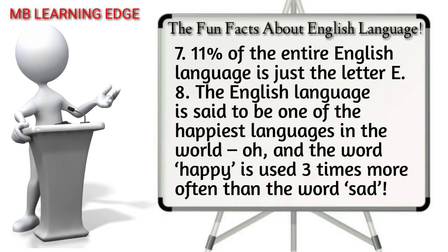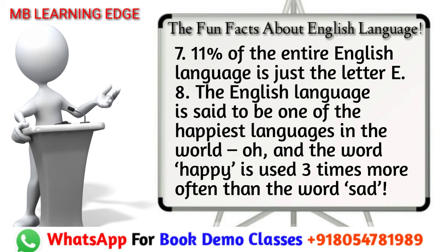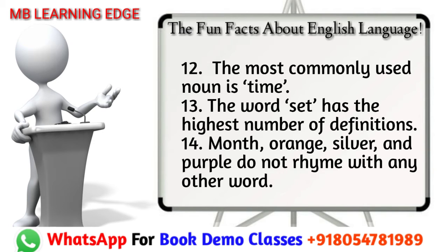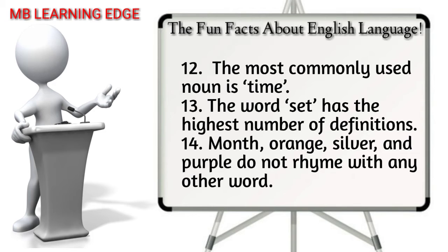8. The English language is said to be one of the happiest languages in the world, and the word 'happy' is used three times more often than the word 'sad.' 9. One-quarter of the world's population speaks at least some English. 10. The US doesn't have an official language. 11. The most common adjective used in English is 'good.' 12. The most commonly used noun is 'time.'